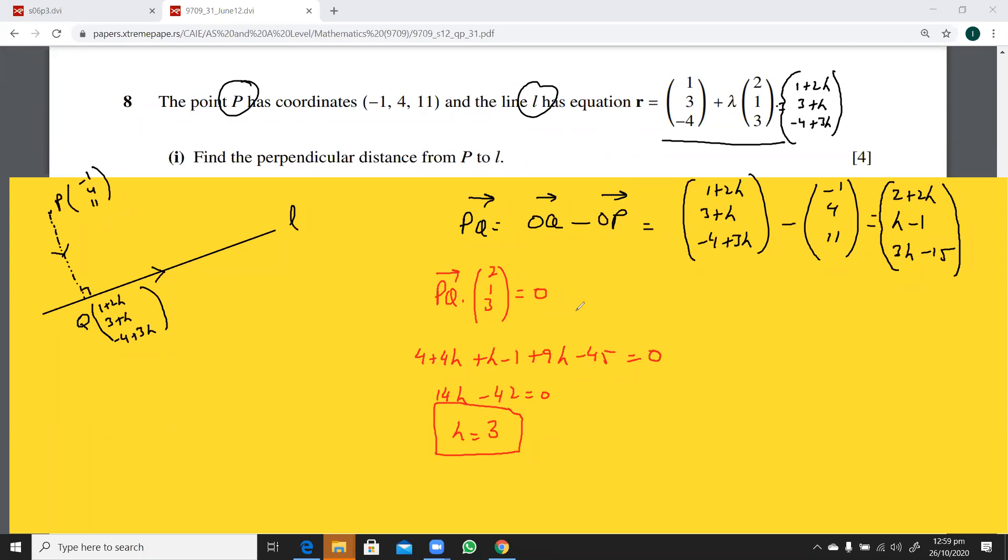So, now, if, suppose, the question was to find the foot of the perpendicular, then you have to substitute your lambda here. If you had to find this OQ, so this could be 1 plus 6, 7, 3 plus 3 is 6, minus 4 plus 9 is 5.